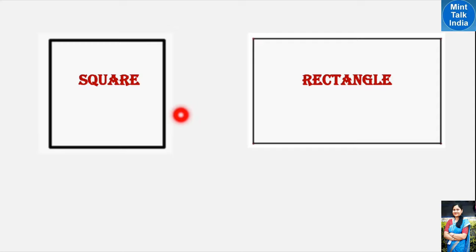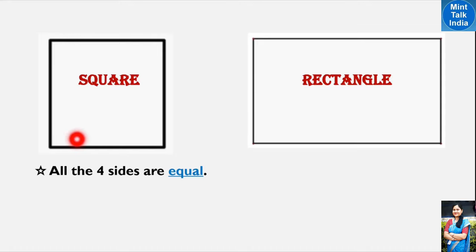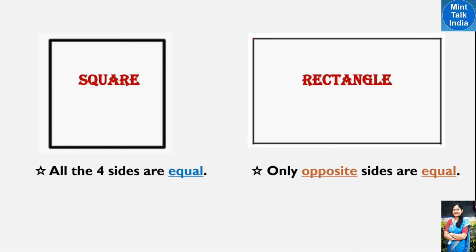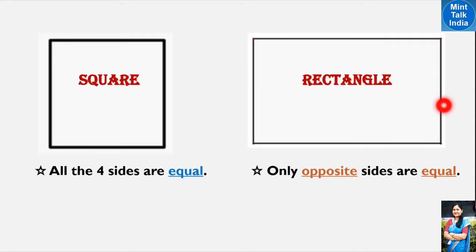We already know that a square is a closed figure where all 4 sides are equal. If we have the measurement of one side, the rest of the three sides will be the same. A rectangle is a closed figure where opposite sides are equal — the length on one side equals the length on the opposite side, and the breadth on one side equals the breadth on the opposite side.